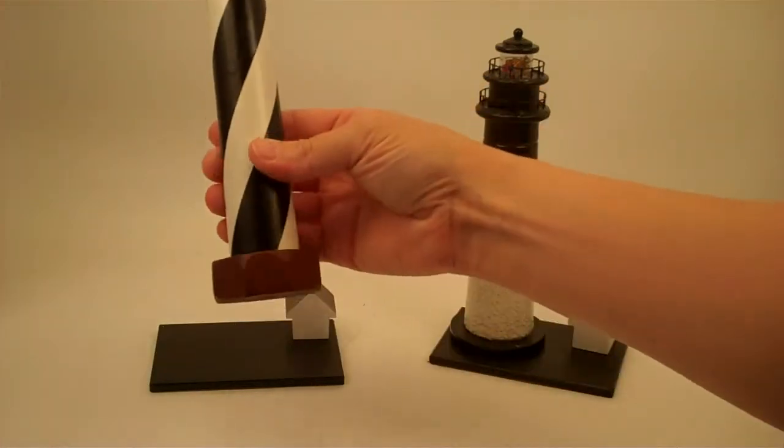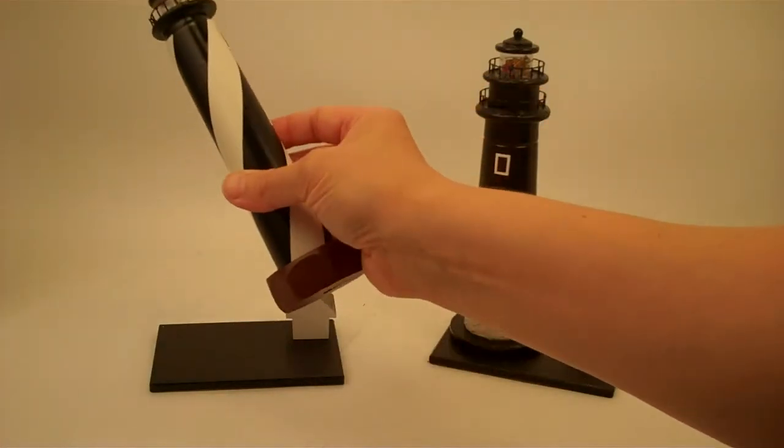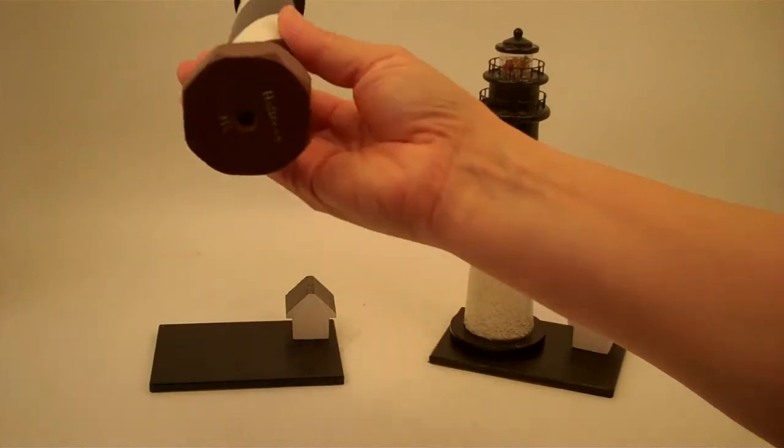This one is Hatteras, North Carolina, with that beautiful spiral paint in black and white. And of course the best part of a kaleidoscope is when you can bring it up to the camera and see all the bright colors of the beads in the kaleidoscopic image. This is a three-mirror system that creates the beautiful full quilt of color.